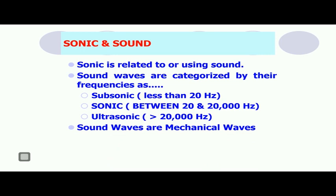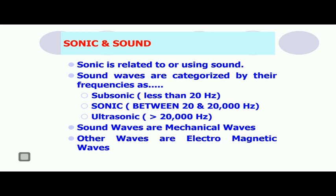Sound waves are mechanical waves. Therefore, sound waves need some medium to travel, and the speed of sound will depend upon the medium, whereas the frequency and wavelength of sound waves can be varied. The other type of wave commonly encountered are electromagnetic waves, such as the signals used for cell phones.